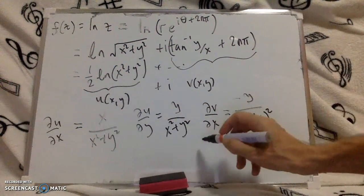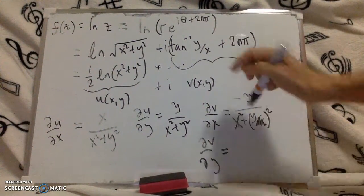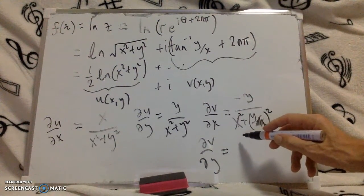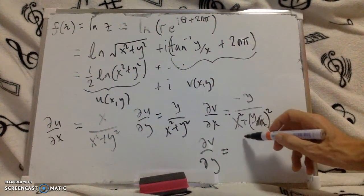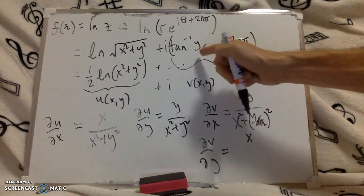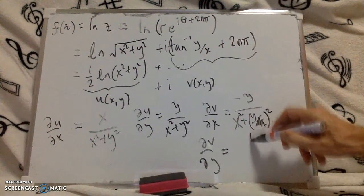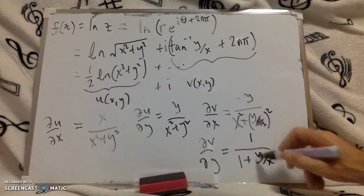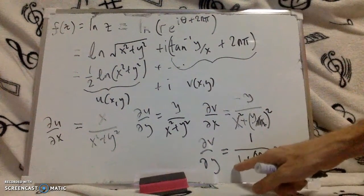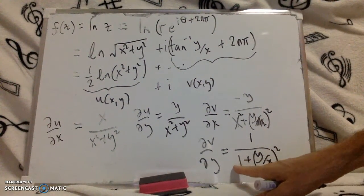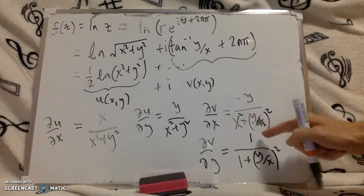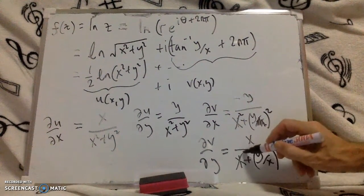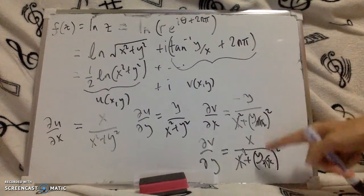And finally we want dv by dy which is slightly easier. Then we just get the same thing as before, this 1 over x. We differentiate this with respect to y, we still get the 1 over 1 plus y over x squared, but we end up with a 1 over x. I'm going to multiply top and bottom by x, so I'm going to get another x on the top and x squared on the bottom, so again I'm going to get x squared and get rid of this, so I end up with x over x squared plus y squared.